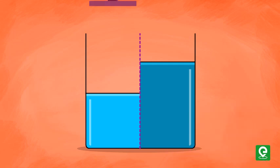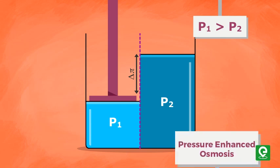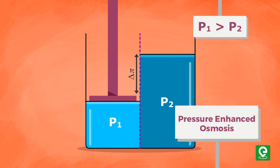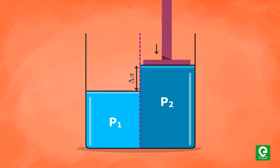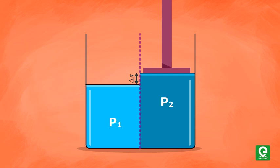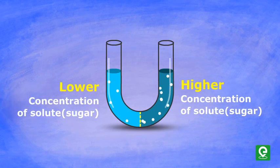If pressure is applied on the solvent side to enhance the process, then it is called pressure-enhanced osmosis. And if pressure is applied on the solution side to retard the process, then it is called reverse osmosis.